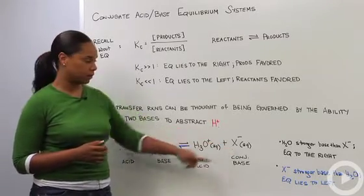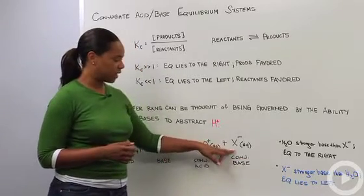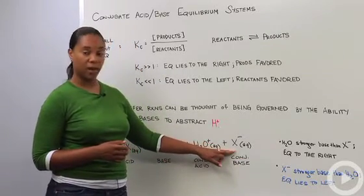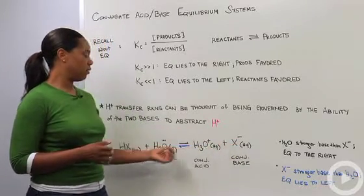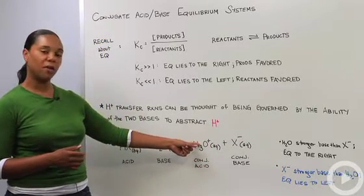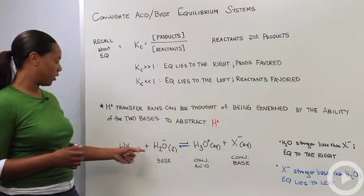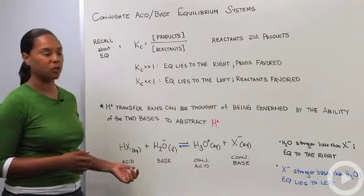If in fact X- tends to be the stronger base, if it's stronger than water, then that means the tendency would be for the back reaction to be favored. So X- would abstract a proton from the hydronium ion to make water and HX, and that would mean that the equilibrium would lie to the left.